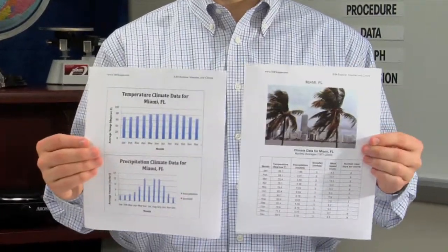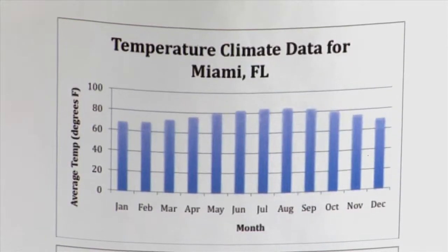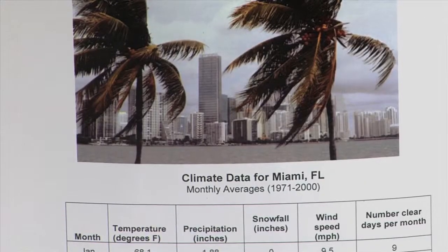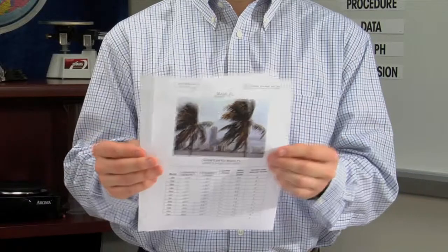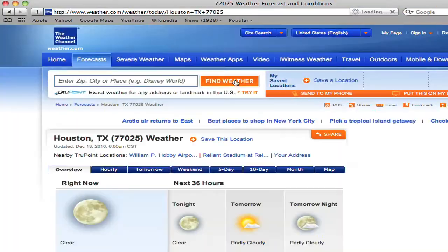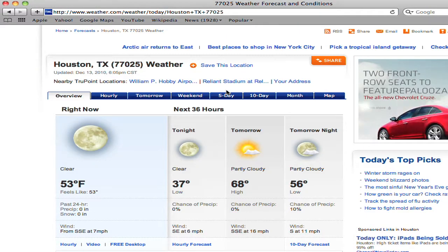Review the climate data table and weather graphs, looking for patterns in temperature and precipitation. Use the internet or newspaper to determine the current weather at each location.